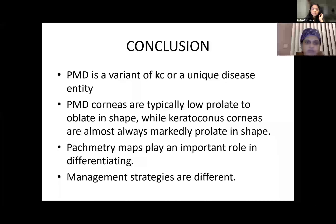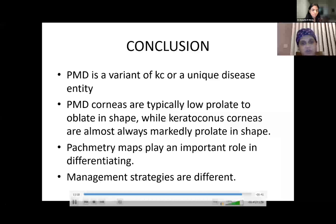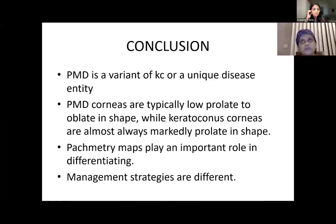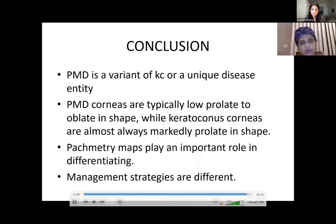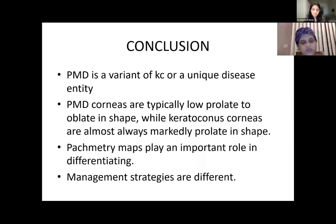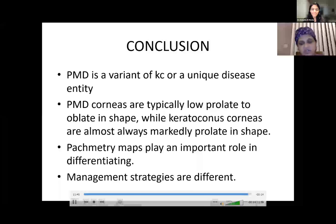In conclusion, whether PMD is a variant of KC or a unique entity remains open for argument. PMD corneas are typically low-prolate to oblate in shape while keratoconus corneas are almost always markedly prolate. Anyone with astigmatism, especially against-the-rule, should have a Pentacam done to rule out PMD. The pachymetric map is most important for differentiating PMD from KC, and it is critical to do so as management strategies differ.